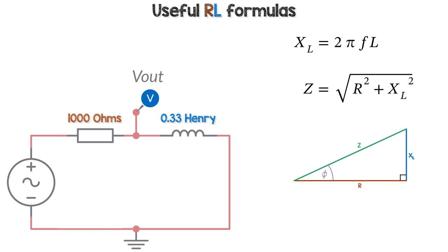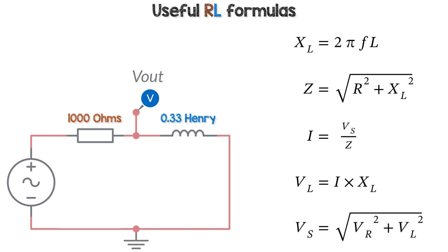Using the impedance triangle, the circuit impedance is equal to the square root of R squared plus XL squared and is in Ohms. The series current in amps is the quotient of the supply voltage and impedance. The inductor voltage is current multiplied by the inductive reactance. Using the voltage triangle in Pythagoras, we can find Vs, Vr or Vl if we know the other two voltages.